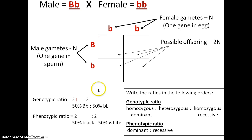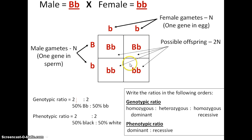Once you've set up the possible gametes on either side of your Punnett square, you put in the combinations. These possible gametes are the result of meiosis, and the filled squares represent possible fertilization events — these are your possible offspring. The possible genotypes here are two heterozygous and two homozygous recessive. For phenotypes, 50% would be black and the other 50% would be white.